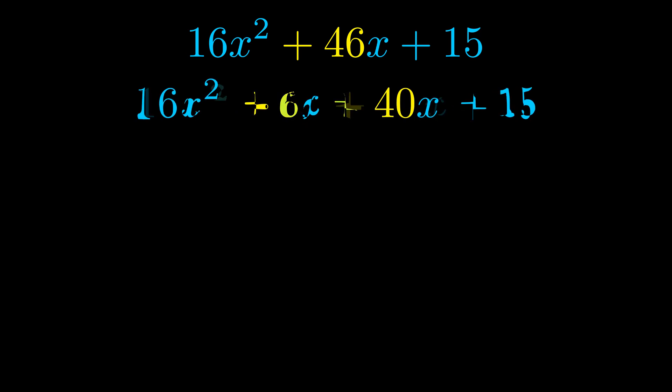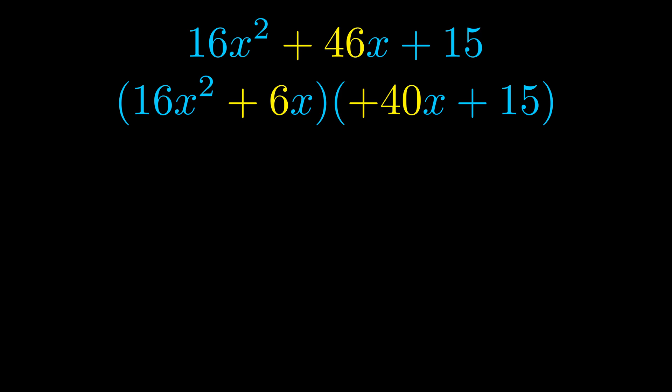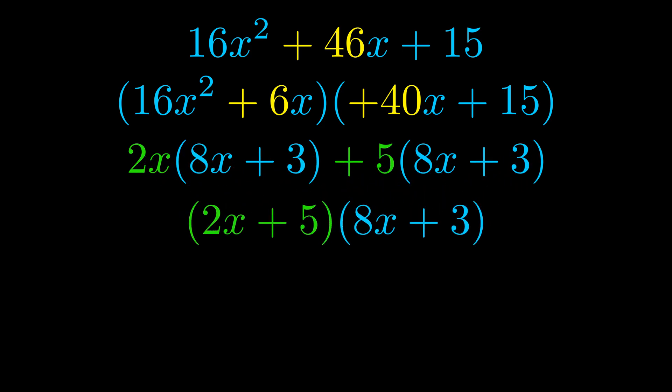Once we've done this we go ahead and we put parentheses around the first term and the last term. And we do that so that we can take the greatest common factor out of both terms. We can see the greatest common factor is now outside in green. Notice also how what remains inside of the parentheses is the same in both cases. The blue values are the same. Those blue values will become one of our factors and we will combine the two green values, the GCFs that we pulled out, to get the other one. And that is our fully factored equation.